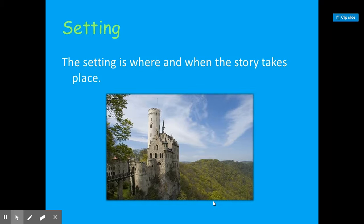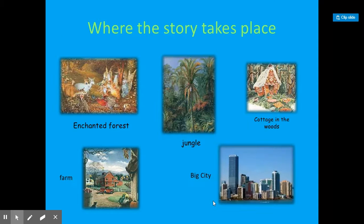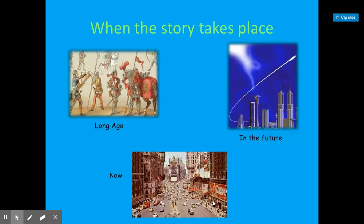The setting is where and when the story takes place. A story can take place in an enchanted forest, a farm, a jungle, a big city, a cottage, or in the woods — those are just some examples. It can also refer to when the story takes place: long ago, in the future, or now.